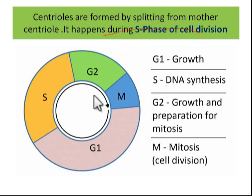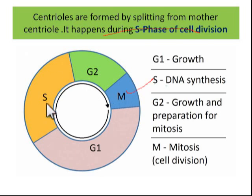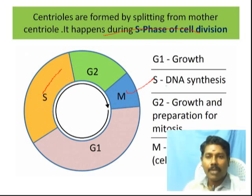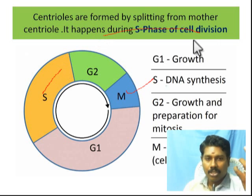The centrioles replicate during the cell cycle. The interphase stages are G1, S phase, and G2. During S phase of the cell cycle, the centrioles replicate. Microtubules of centrioles are formed during S phase, preparing for the upcoming cell division.